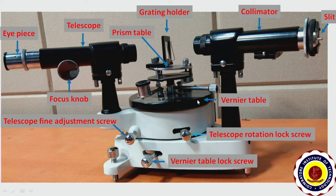This one is the vernier table. This screw is for locking the telescope rotation, and this one is for fine adjustment.